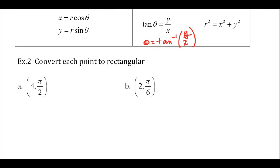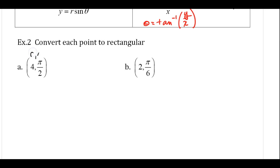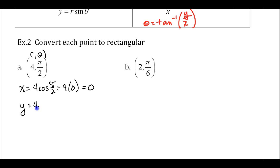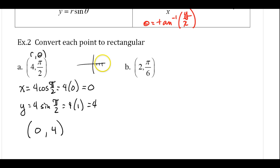Let's convert these to rectangular. I have a point (r, theta), so I know that my x coordinate is going to be 4 cosine of pi over 2. That's 4 times 0, which is 0. And I know that y is going to be 4 times the sine of pi over 2, so that's 4 times 1, which is 4. So the point becomes (0, 4). That should make sense because if I went out to the fourth circle and rotated pi over 2, I'm at the top. Looking at rectangular, I went 0 in the x direction and up 4 in the y direction — (0, 4).